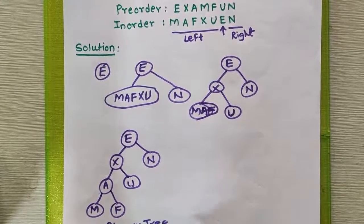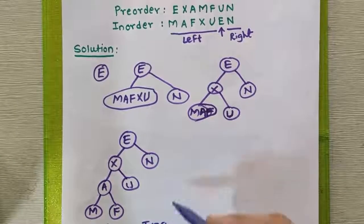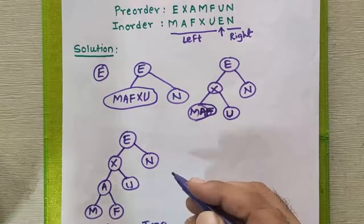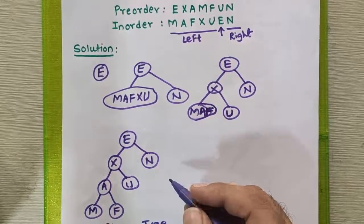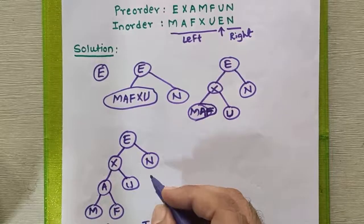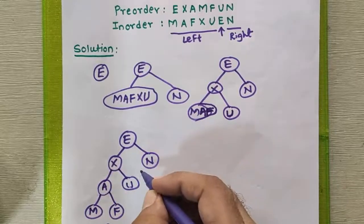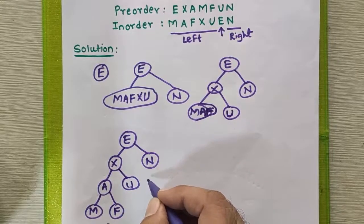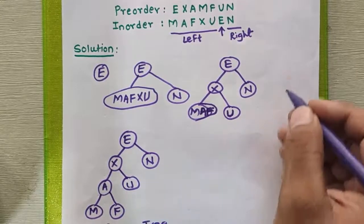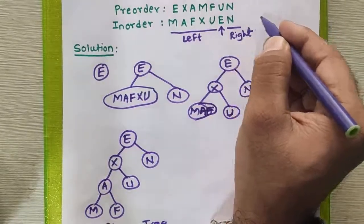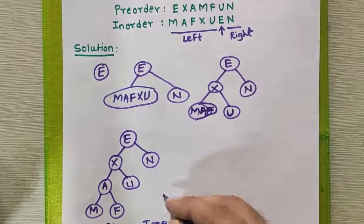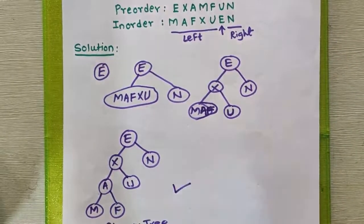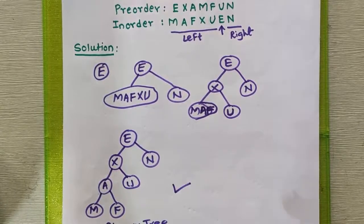To check whether the tree designed by us is correct or not, we will traverse the tree in pre-order and in-order fashion. If we get the same sequences as given in the problem, then we can say that the tree designed by us is correct; otherwise it is wrong.